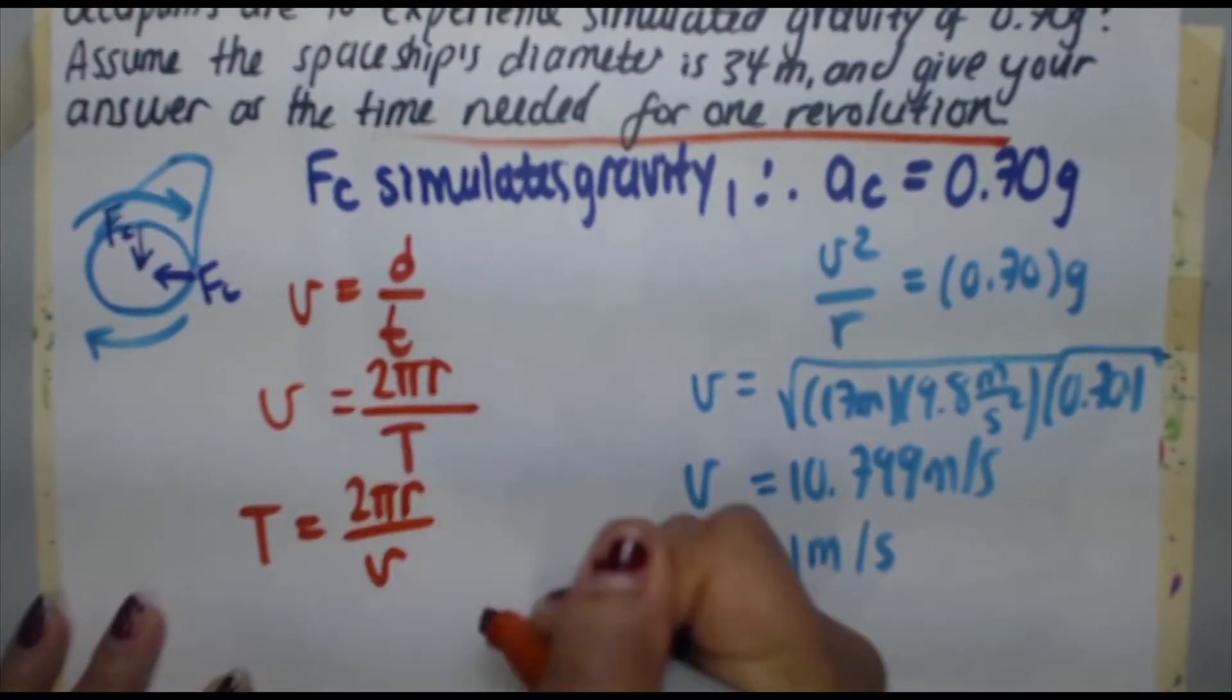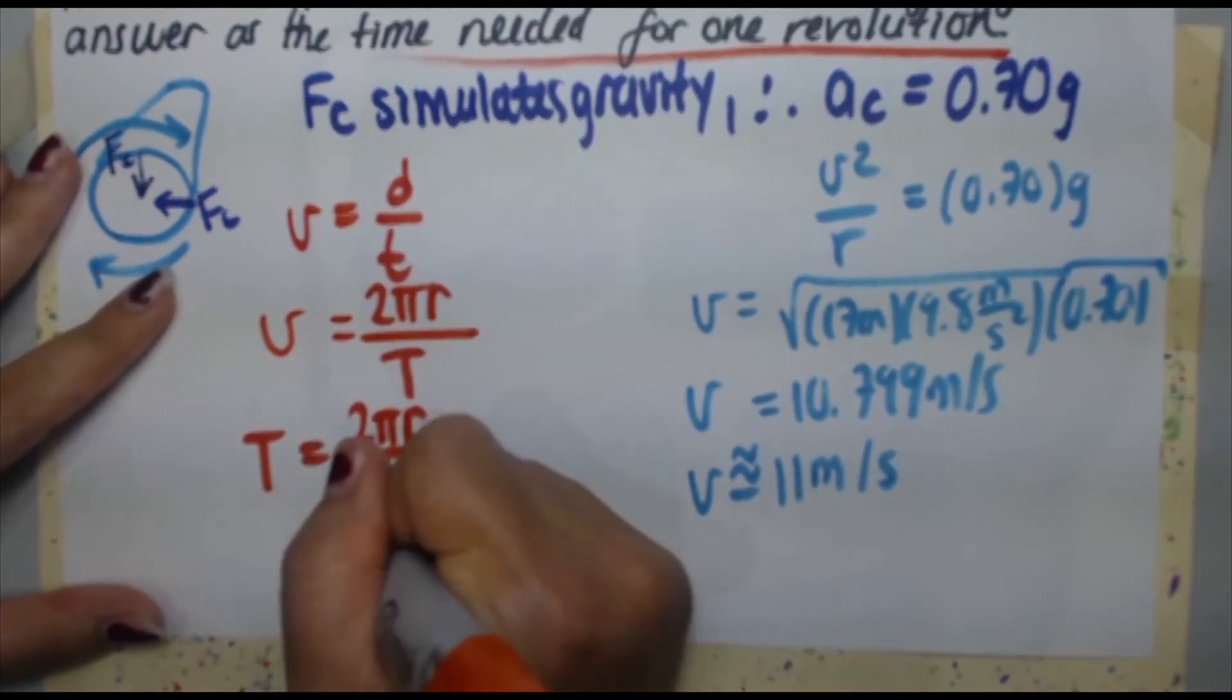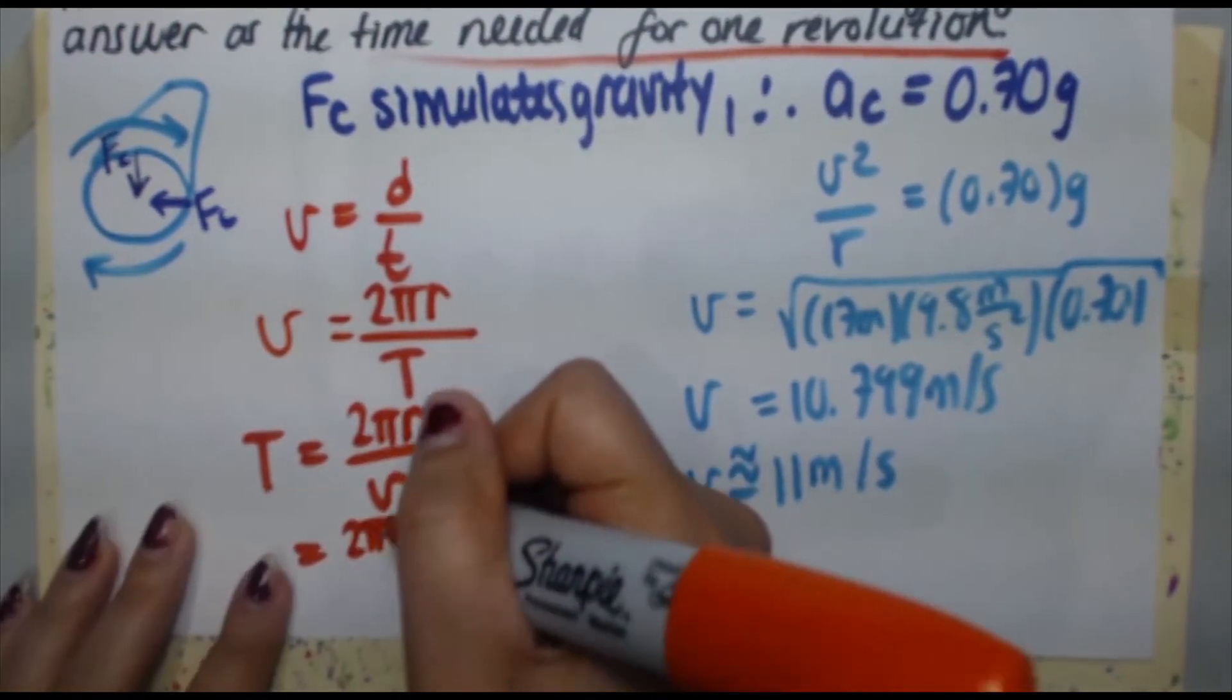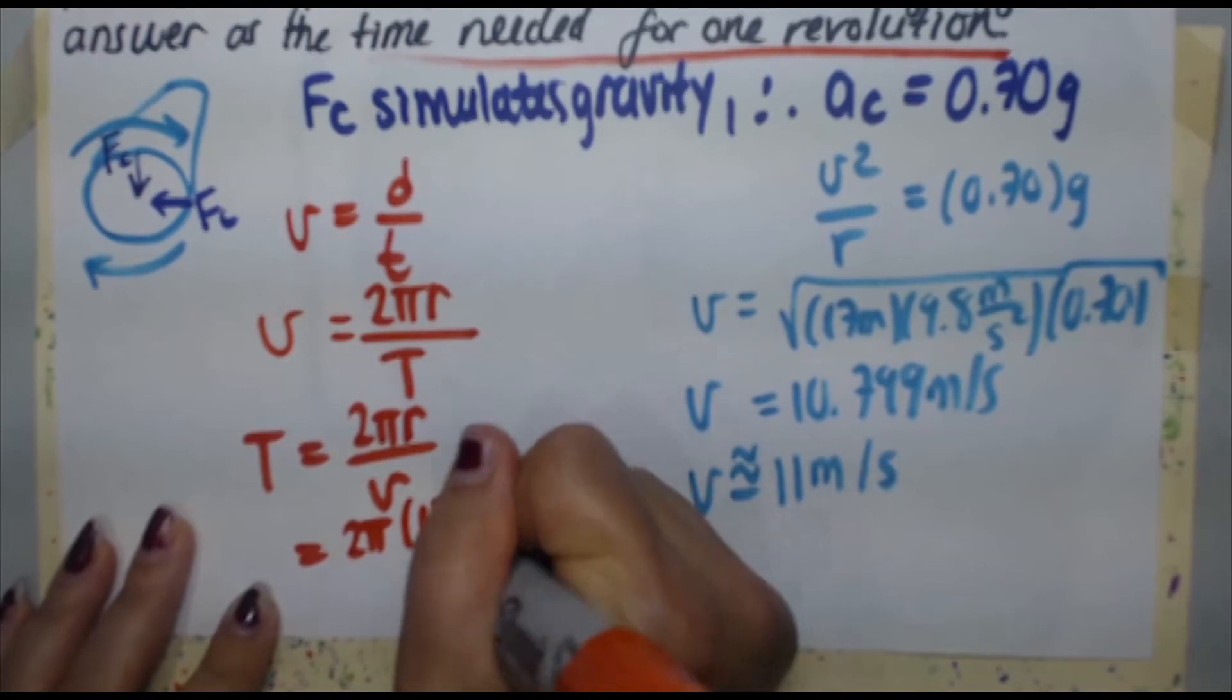Plug in your values, so 2πr is 17 meters divided by v, 11 meters per second.